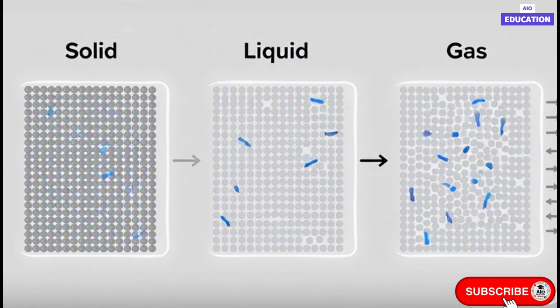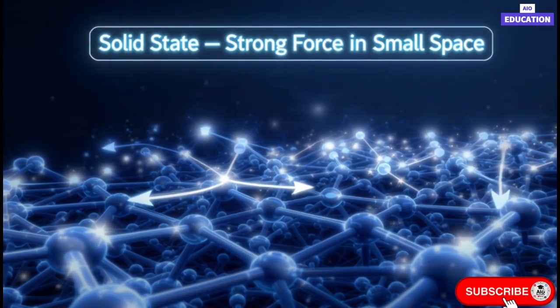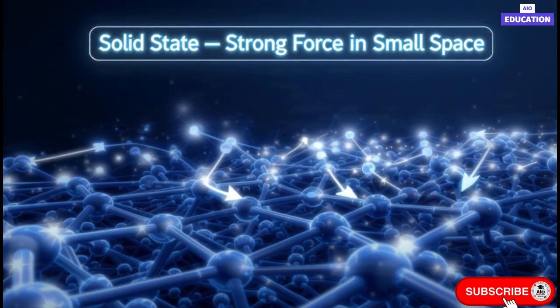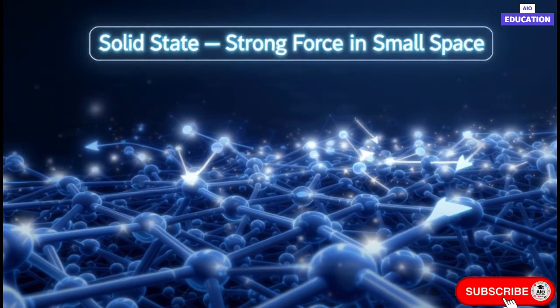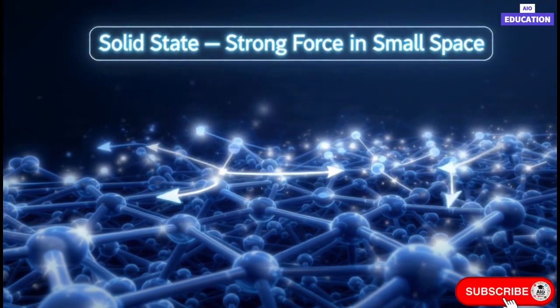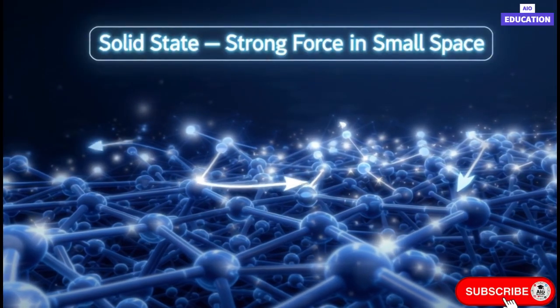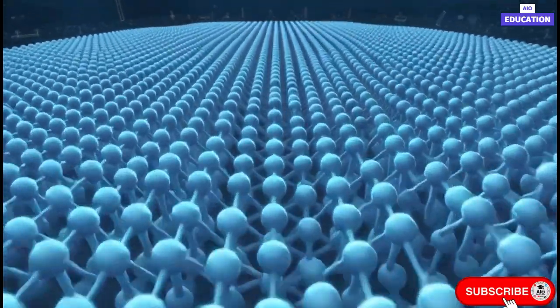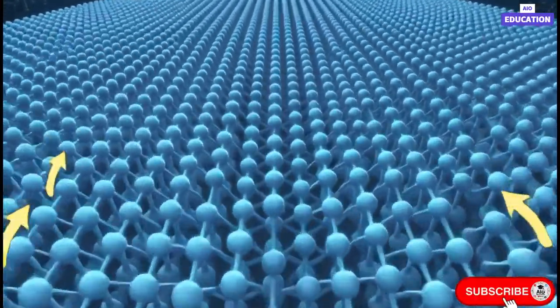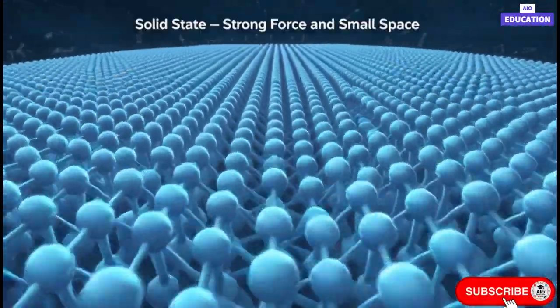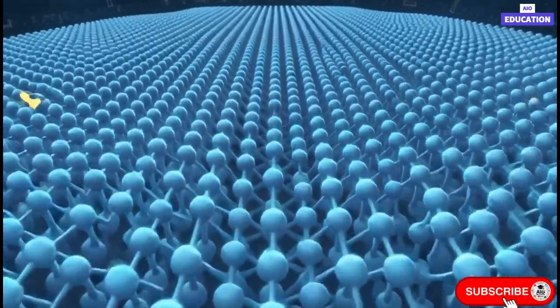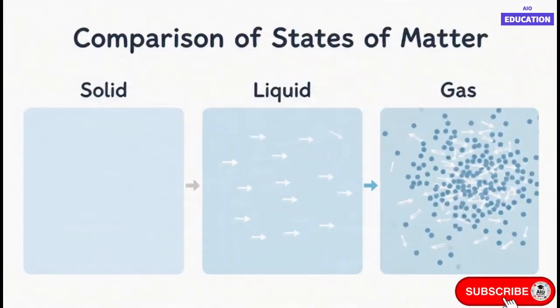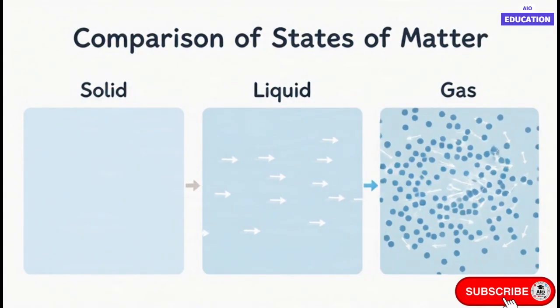When we heat a solid, the vibration of its particles increases. After some time, when the energy becomes high enough to overcome the strong forces of attraction, the solid begins to change into a liquid. This process is called melting. And the temperature at which this happens is called the melting point. For example, ice melts at 0 degree Celsius, while iron melts at 1538 degree Celsius. The higher the inter-particle attraction, the higher the melting point.